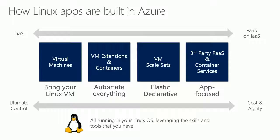This leads me to an important point: the architectural choices you have for building Linux applications in Azure. You have support for virtual machines, extensions on top of those VMs, containers as a use case of those extensions, scale sets, and third-party PaaS and Azure container services. Customers can meet where they are, whether they want to do more IaaS or more PaaS. There are many use cases for everything inside this spectrum. What I want to show you now is a stack-based view so you can see how this exactly maps out to how an application could be potentially built.